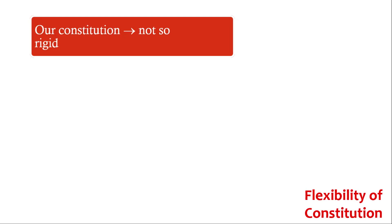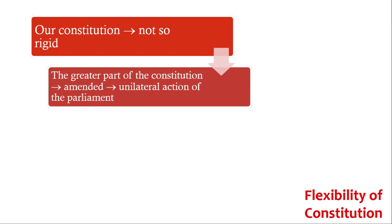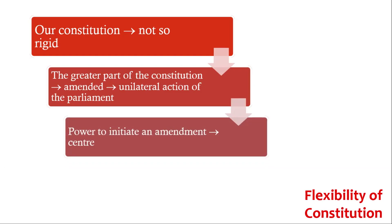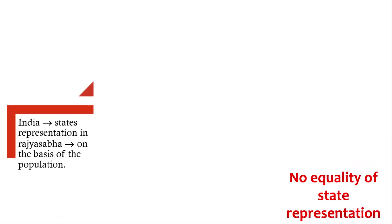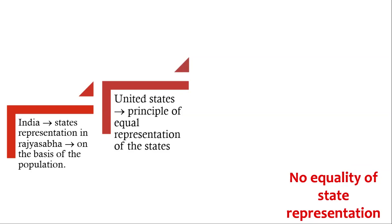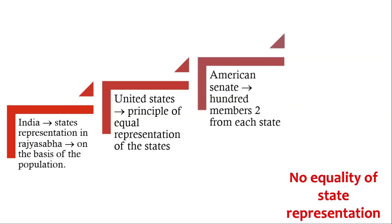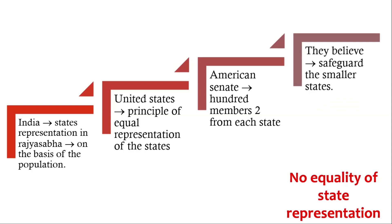The Flexibility of the Constitution: In the federal features of the Indian Constitution, we learned about the rigid constitution where the process of amendment is not so simple. But our constitution is also not so rigid when compared to those of other federations. The greater part of the constitution can be amended by the unilateral action of Parliament, whether by simple majority or by special majority. However, the power to initiate an amendment lies only with the Centre in India, whereas in the United States, the states can also propose an amendment. Regarding No Equality of State Representation, in India the states are given representation in the Rajya Sabha on the basis of population, which is why membership varies from 1 to 31 for different states. The United States follows the principle of equal representation in the upper house — two from each state — to safeguard the smaller states.